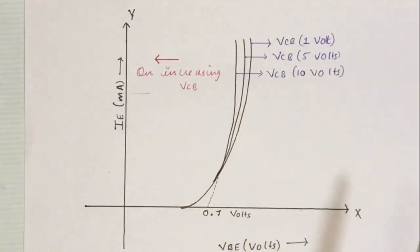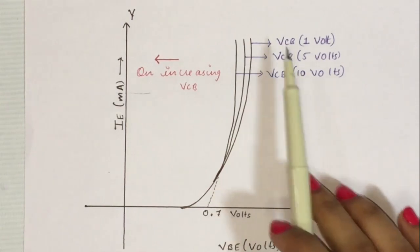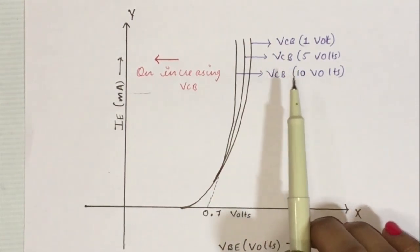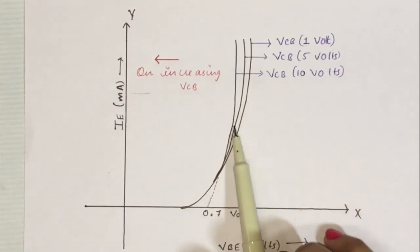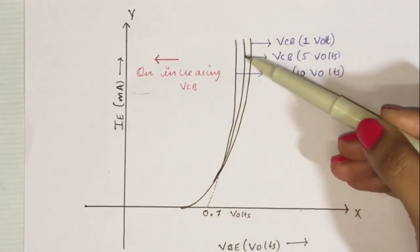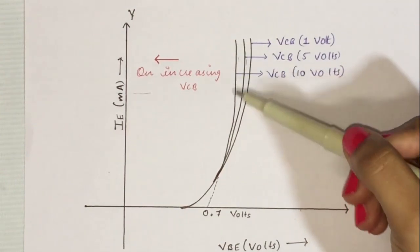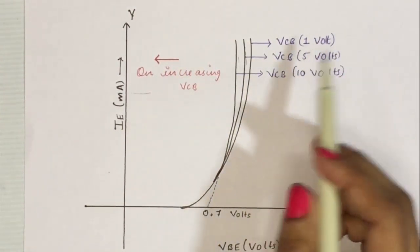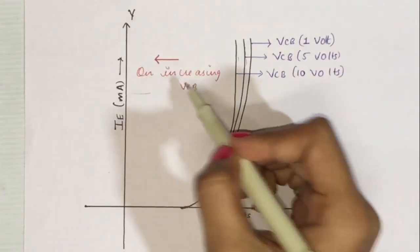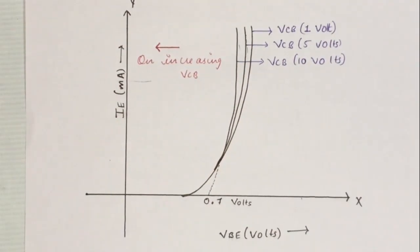The input characteristic curve is shown for different values of output voltage VCB. For VCB = 1 V, 5 V, and 10 V we get different curves, and we observe that on increasing VCB the curve shifts. In summary, the input characteristic curve provides information about input current with respect to input voltage for different values of output voltages.